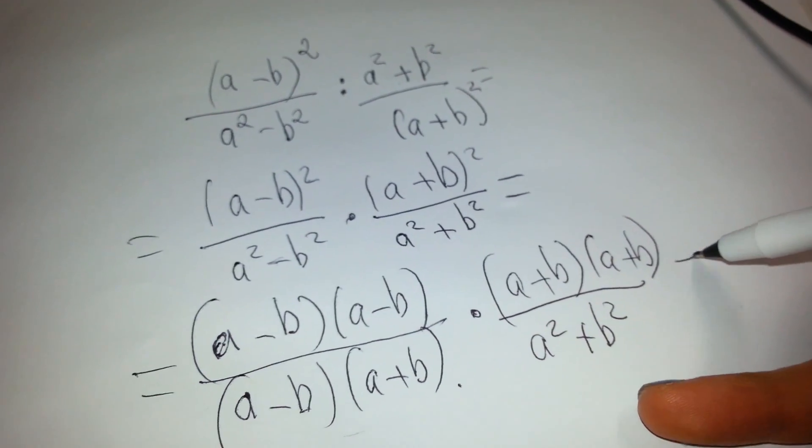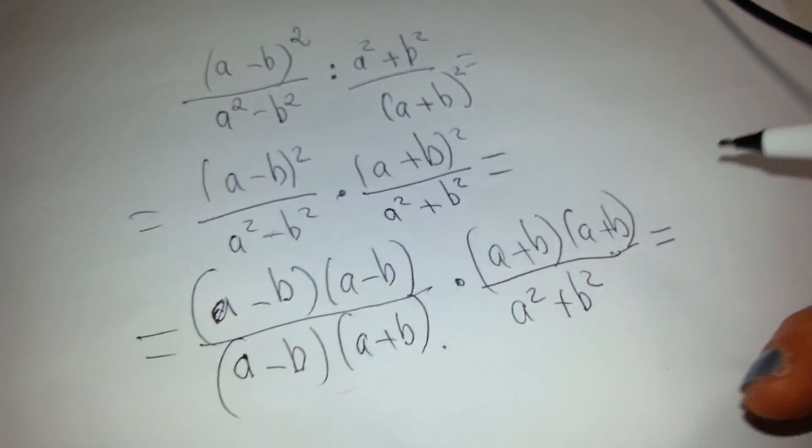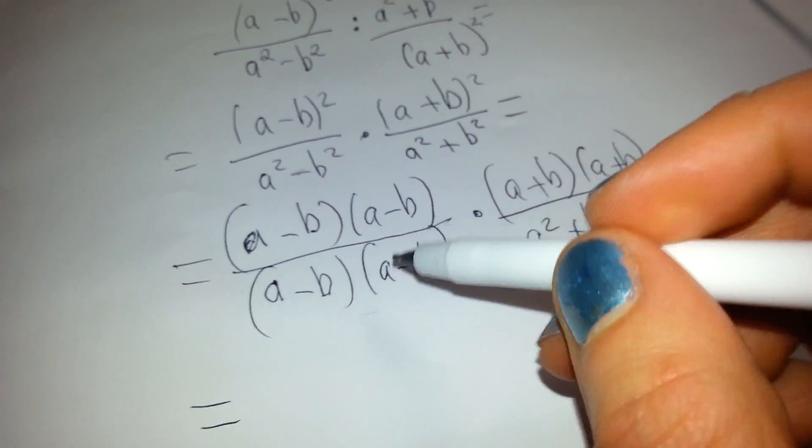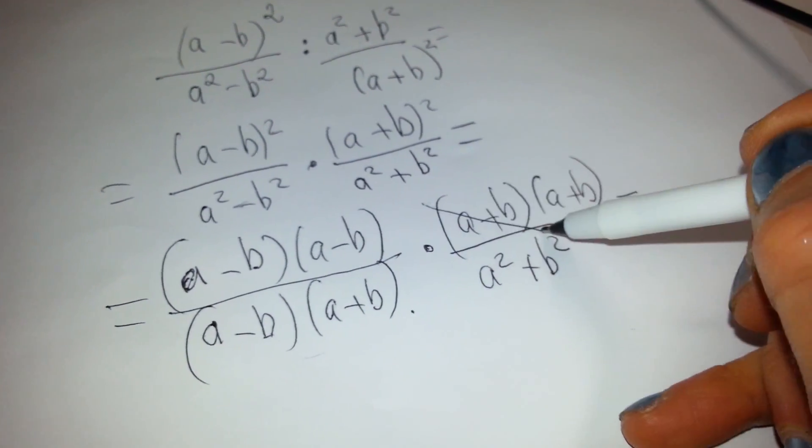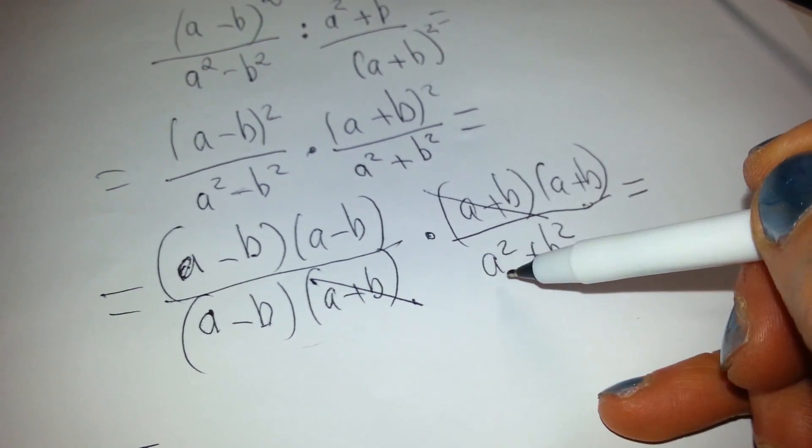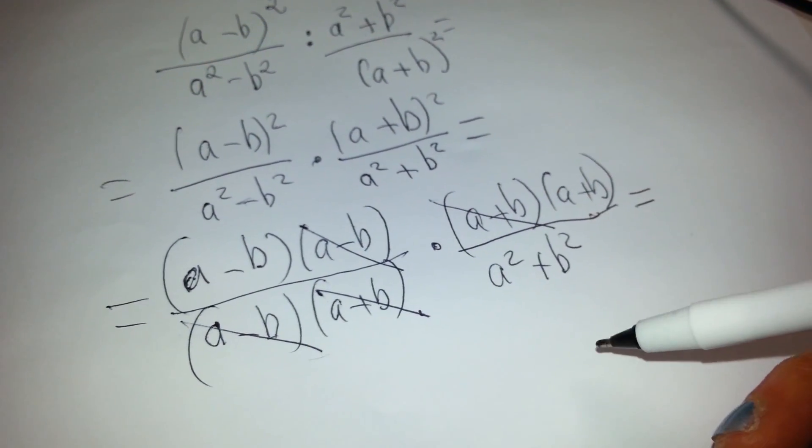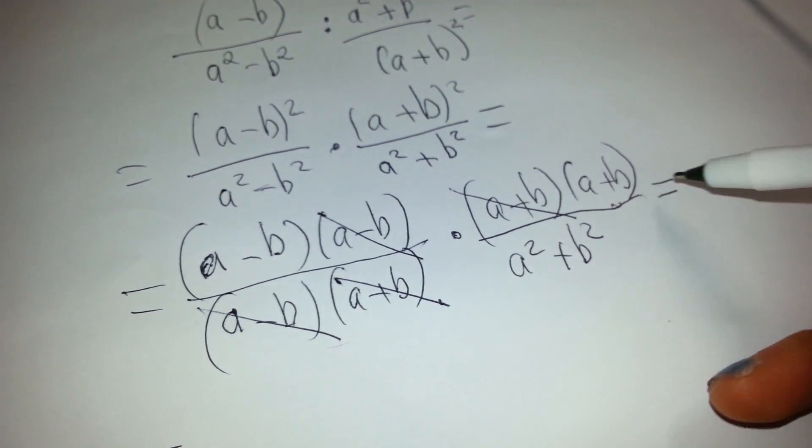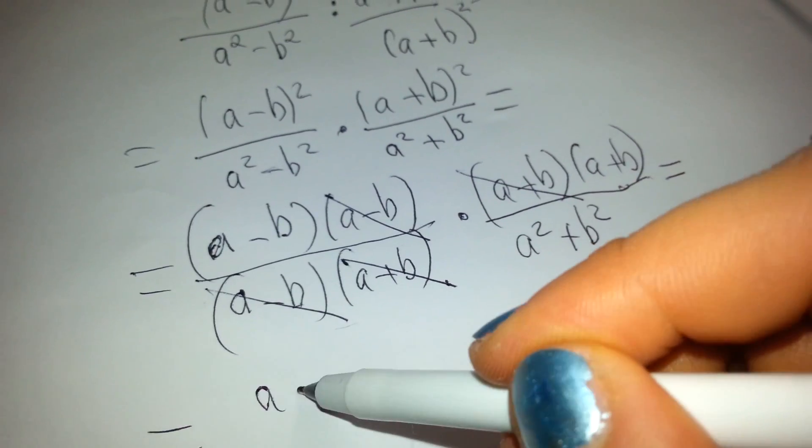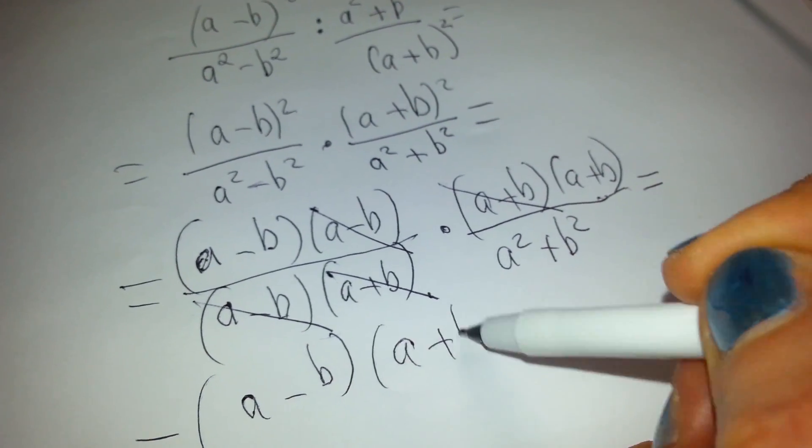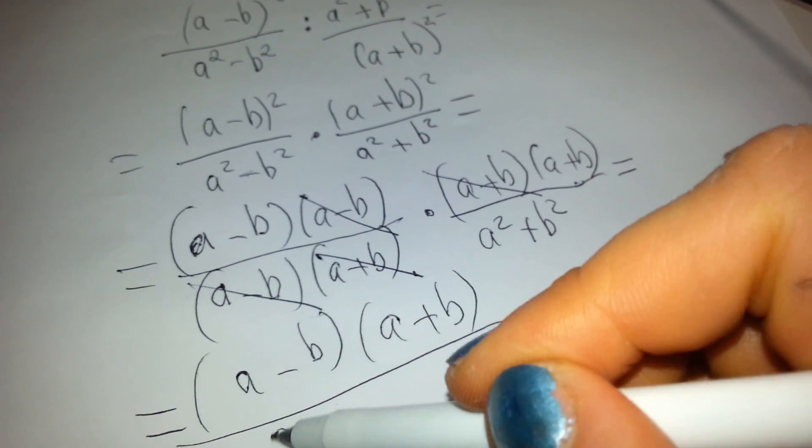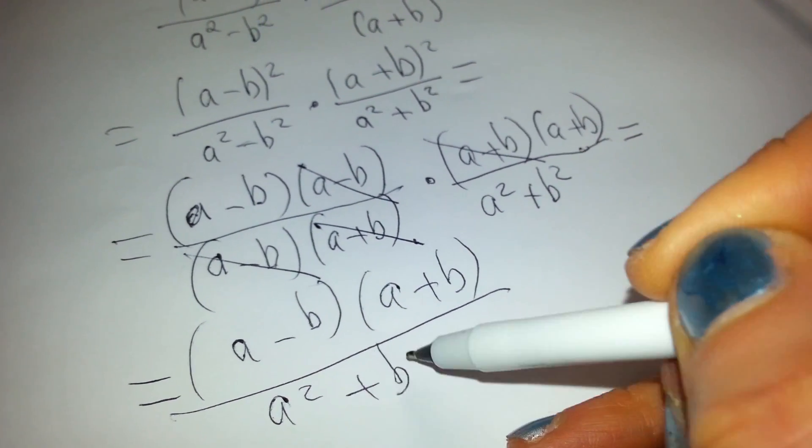A plus b, now equal. Okay, so now we have, we can cancel these out, cancel these out. And what we have left right now is a minus b, a plus b, and we have a squared plus b squared.